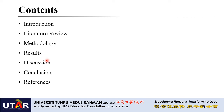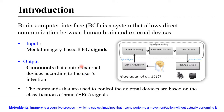Brain Computer Interface is basically a system that allows direct communication between the human brain and a BCI device. The input to the system are EEG signals, whereas the output are the commands that control external devices based on the subject's intention.